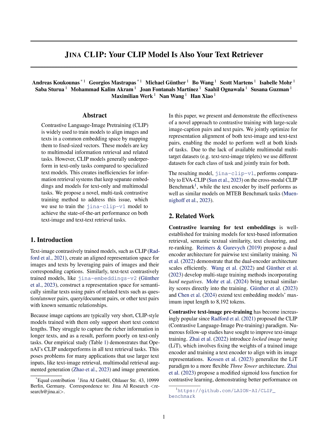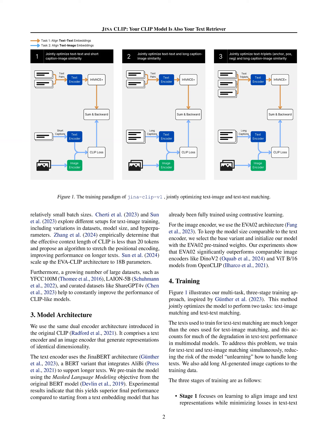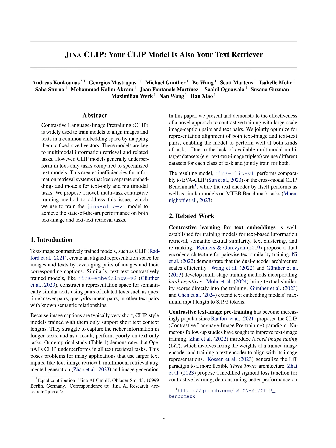Additionally, the model's text encoder performs comparably to specialized text-only models on tasks like the Massive Text Embedding Benchmark, showcasing its versatility and effectiveness in text-based applications. The three-stage training method focuses on aligning image and text representations, incorporating longer synthetic image captions, and utilizing hard negatives to improve the text encoder's ability to distinguish relevant from irrelevant text, resulting in enhanced text-text and text-image matching capabilities.